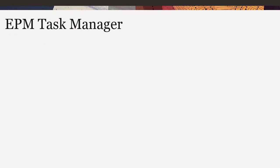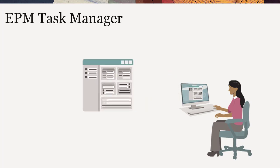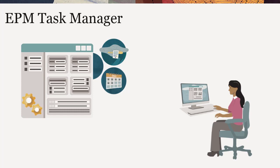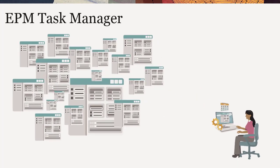With Task Manager, you can centrally manage a large set of tasks for a business process, such as planning. It provides visibility and automation of tasks, as well as records activities related to those tasks. With Task Manager's scalability, you can execute hundreds of tasks all at the same time.